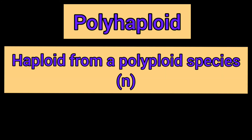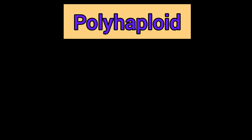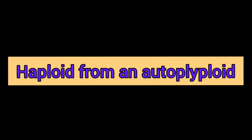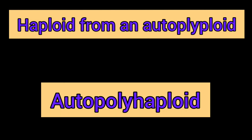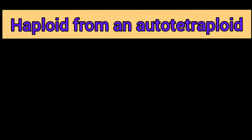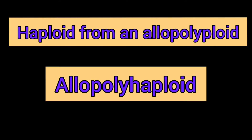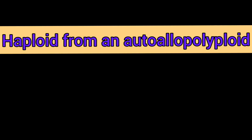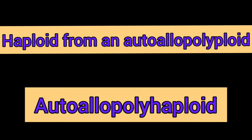Polyploid species give rise to five types of polyhaploids. If a haploid is from an autopolyploid, it is known as an auto polyhaploid. If it is from an autotetraploid, it is known as a dihaploid. If a haploid is from a segmental polyploid, it is known as a segmental polyhaploid. And if it is from an auto allopolyploid, it is known as an auto allo polyhaploid.